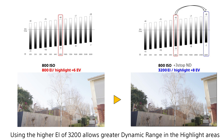When I shot this scene, the highlights were blowing out at 800 EI. I applied a three-stop ND filter and then pushed two stops up in the exposure index, which still leaves us one stop of ND to maintain a great exposure — and we are actually getting more dynamic range in the highlights by going up to that 3200 EI.